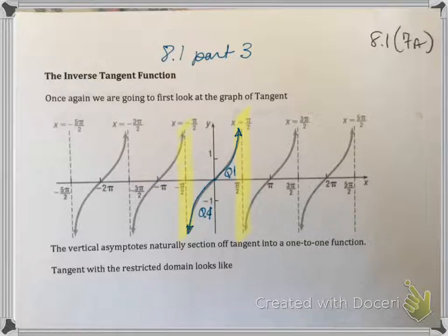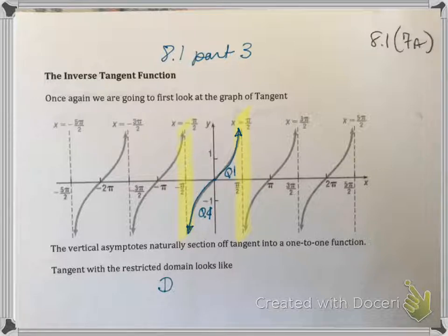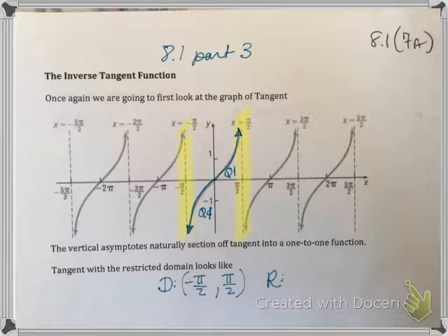We've restricted it down. The domain of the restricted tangent graph is going to be negative pi over 2 to pi over 2. We can't include those values because that's where the asymptotes are. And the range is going to be negative infinity to positive infinity.